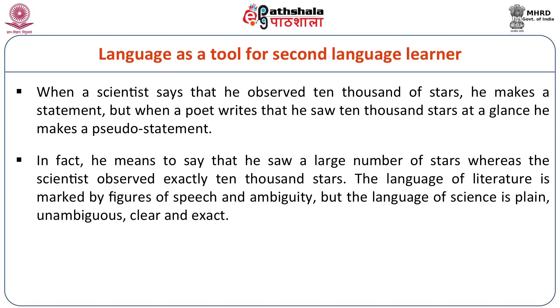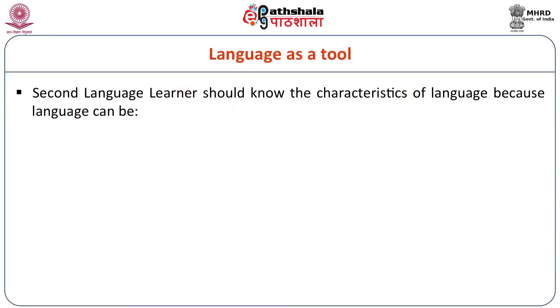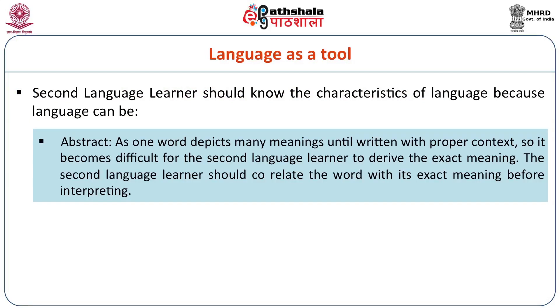The language of literature is marked by figures of speech and ambiguity. But the language of science is plain, unambiguous, clear and exact. So while communicating, the second language learner should know for which purpose he is communicating. He is using language as a tool. The second language learner should know the characteristics of language as well, because language can be abstract or it can be arbitrary.